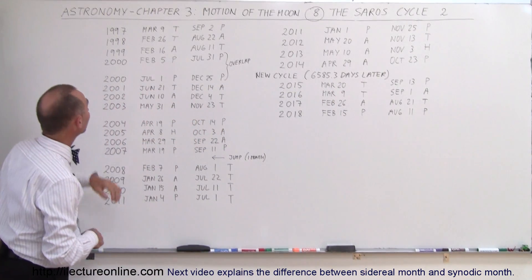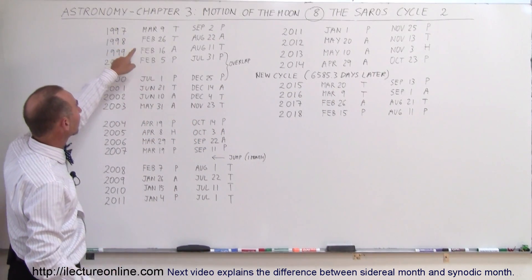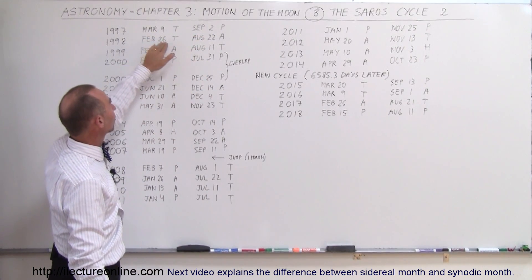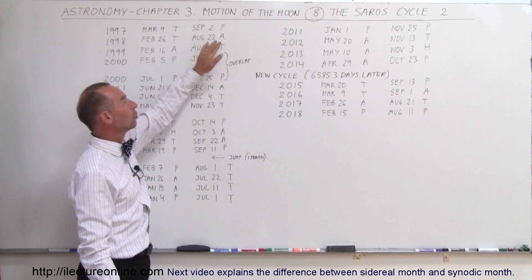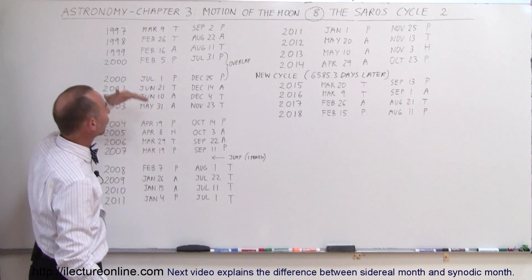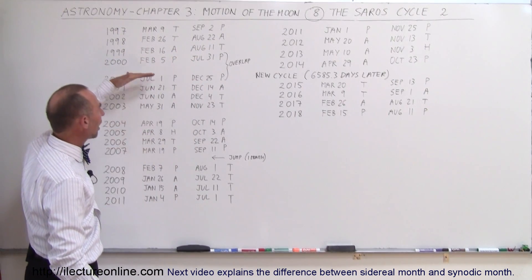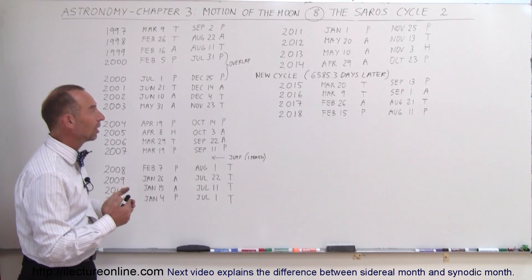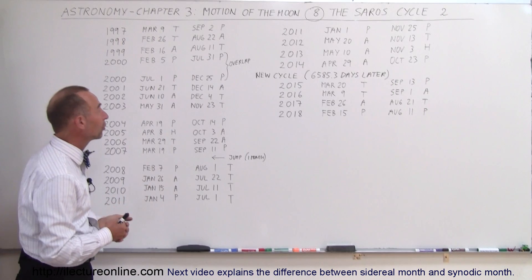Starting the cycle in 1997 we had an eclipse, a total eclipse on March 9th, September the 2nd was a partial eclipse, February 26th we had a total eclipse, August 22nd we had an annular eclipse and so forth. You can go down the row and see how we had all these eclipses, a total of 40 in the cycle that lasted 18 years, 10.3 days.